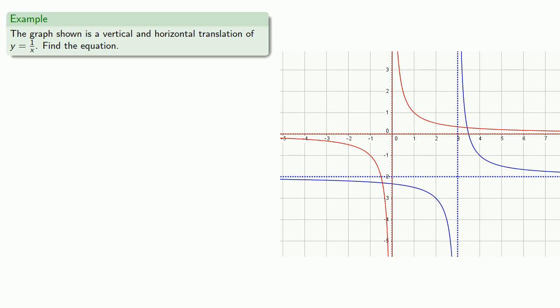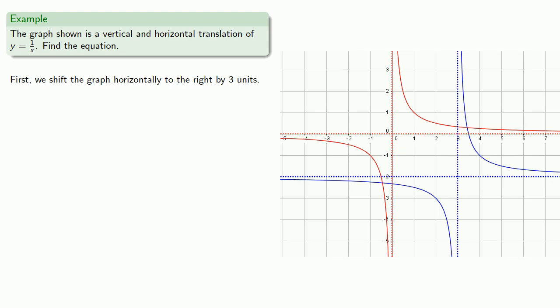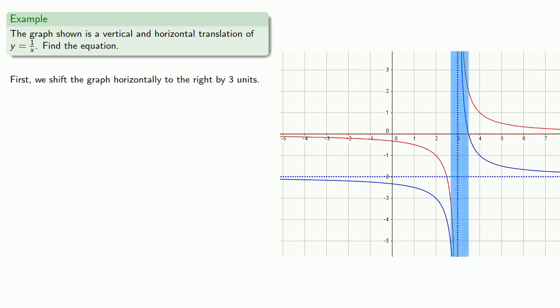y = 1/x has a vertical asymptote of x = 0. First we'll shift our graph horizontally to the right by 3 units, which puts the vertical asymptote in the right place.